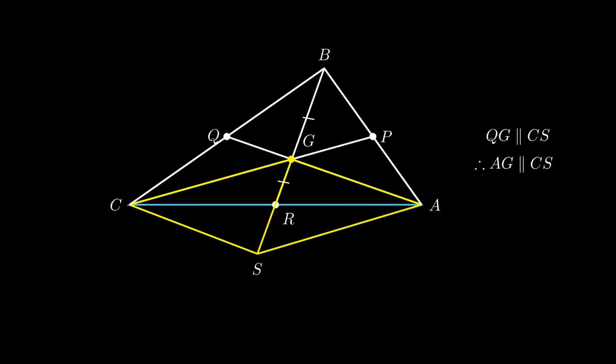Similarly, in triangle BAS, point G and point P are the midpoints. Therefore, again by the application of midpoint theorem, segment PG is parallel to segment AS. Since opposite sides of quadrilateral AGCS are parallel, therefore quadrilateral AGCS is a parallelogram.